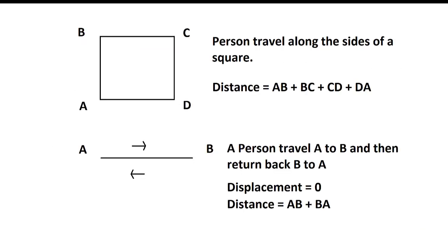For example, consider a square path ABCD. Object starts from A, goes to B, then C, then D, then back to A. Total distance covered is the sum of all sides — AB + BC + CD + DA. But since the object returned to its starting point A, the final position equals the initial position.